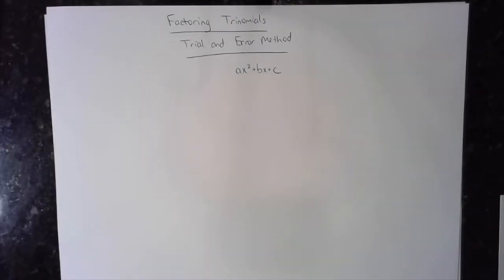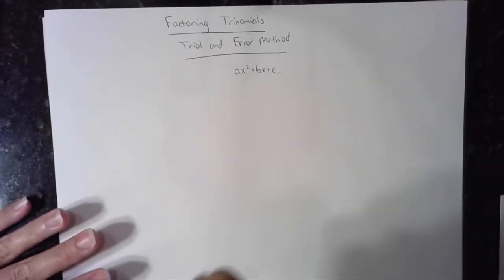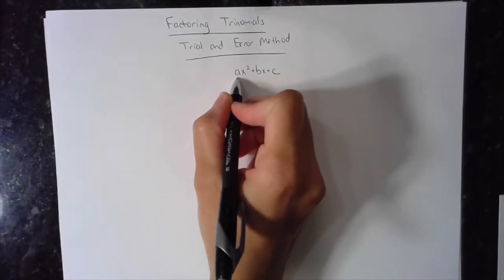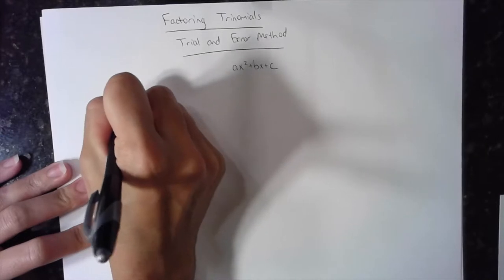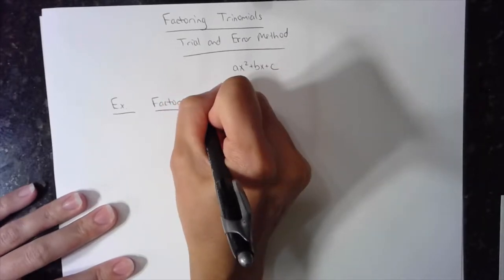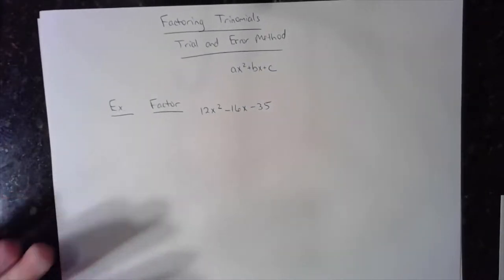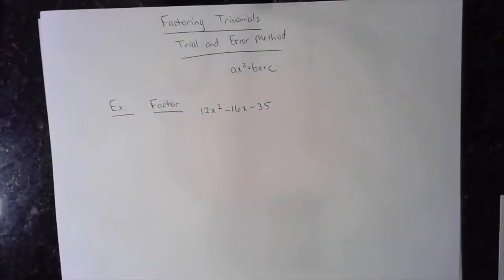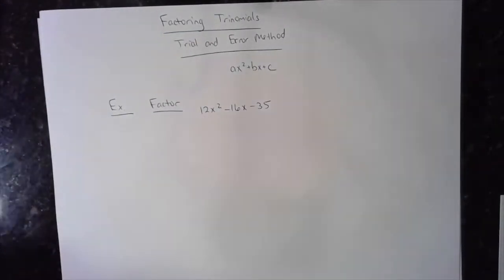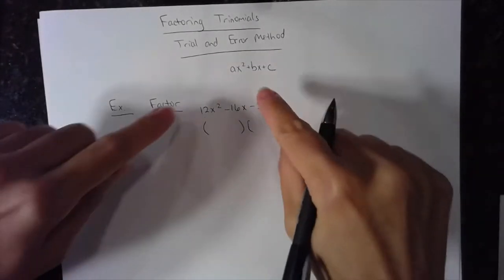Alright guys, we just did factoring trinomials with the trial and error method, but specifically of the form x squared plus bx plus c. These are a little bit more difficult. Now we have a coefficient in front of x squared other than 1. So it looks a little bit more difficult than what we did in the last video. The coefficient in front of x squared is not 1. So now things change a little bit, but the concept is still the same. It's still a backwards foil. We're still going in the opposite direction of foil. This came from foil.